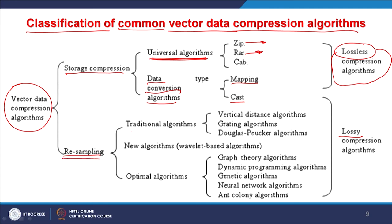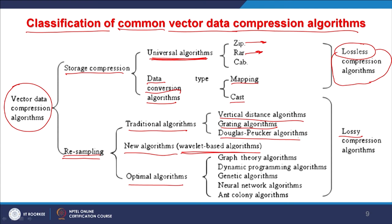For resampling methods, there are traditional algorithms, new algorithms — especially wavelet-based algorithms which are becoming very powerful and useful — and then optimal algorithms. Traditional algorithms include the vertical distance algorithm, grading algorithm, and Douglas-Peucker algorithm. We do not want to go into much more detail about these algorithms, but tools and techniques are being implemented — for example wavelet-based or neural network-based — and also ant colony optimization. These tools are being tried in almost all domains: GIS, digital image processing, and computer training to perform tasks in a much more efficient way.